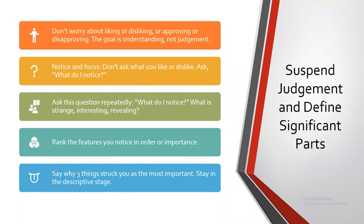First, we'll talk about the first two steps. The first step — suspend judgment — is really a frame of mind we want to get into. It's not so much that we're doing something; it's how we want to be thinking as we go through this process. A lot of students see materials and their first thought is: is it good or bad? Do I like it or not? That's what we want to avoid — those value judgments. Our goal here isn't to determine whether we like something or how we feel about it. The goal is just to understand it on its own terms: what is it trying to do, what do the creators intend, and how is it working on its audience?